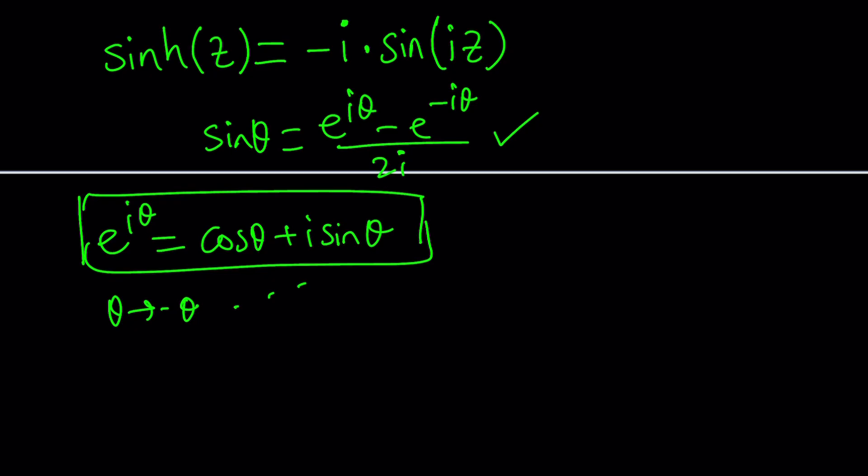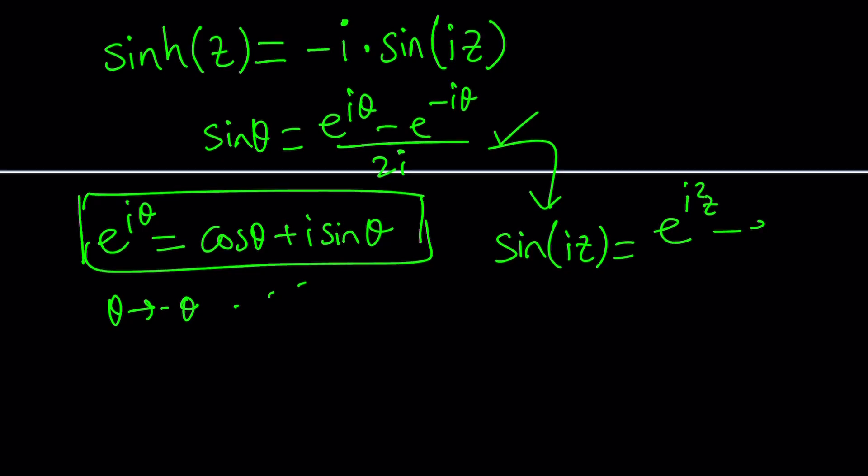But this one, and then replace theta with negative theta, you'll get another equation, so on and so forth. Anyways, this is sine theta. If you replace theta with iz, this gives you sine of iz, think about it, e to the power i times iz, which is i squared z, and negative i times iz is e to the power negative i squared z, divided by 2i, and i squared is negative 1. Did I say that? Well, it's kind of implied because if i is the square root of negative 1, you just square both sides, which will be valid, right?